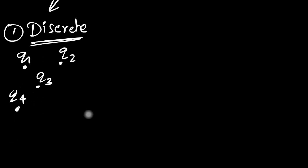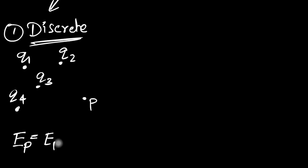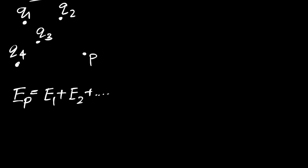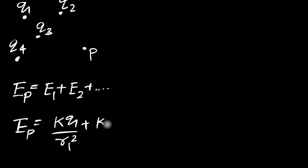When we have such a discrete charge distribution, if I ask you what is the electric field at any point P, then what you do is apply the superposition principle as we did before. You calculate the electric field of charge one alone, then charge two alone, and so on. You just do a summation. So the electric field at point P would be k·q1 divided by r1 squared plus k·q2 divided by r2 squared.